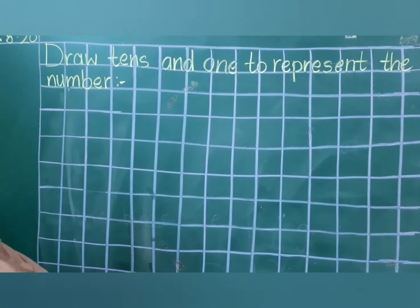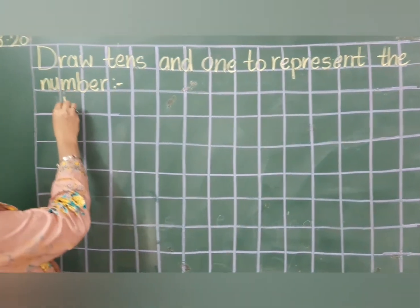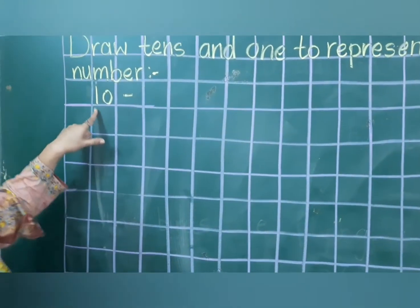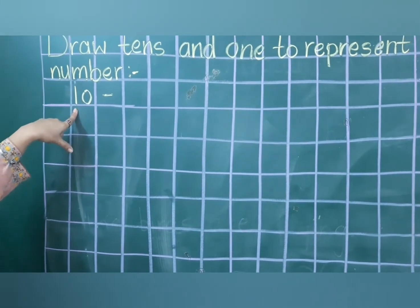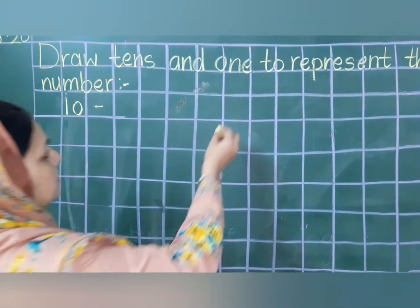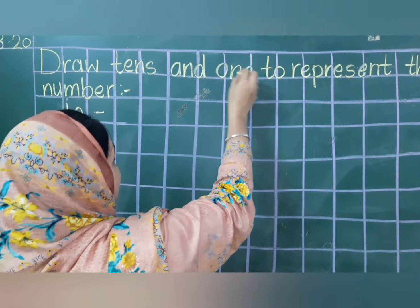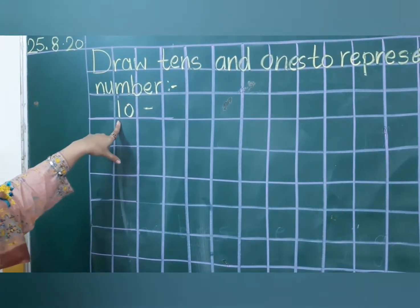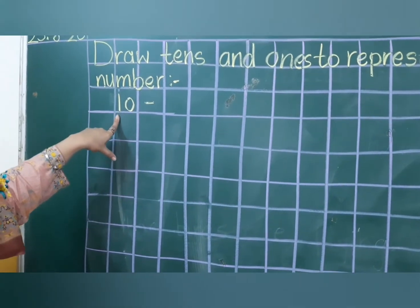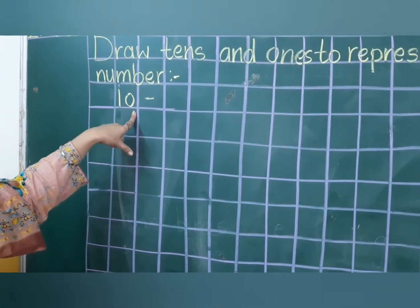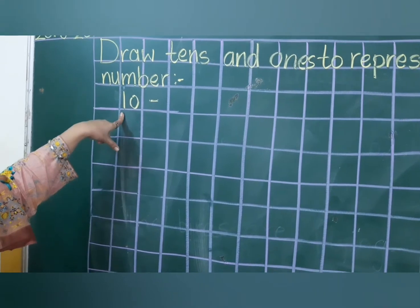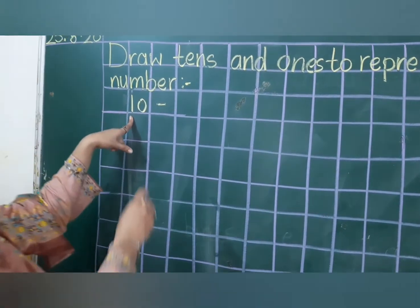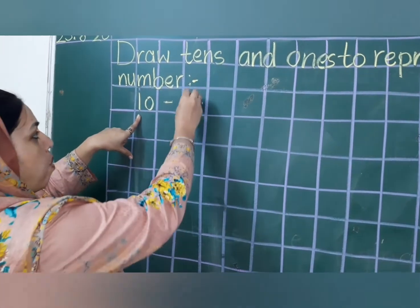Our first number is ten. So what are we having on the ones place? Zero. And at tens place? One. Ten means we have to make only one bundle.